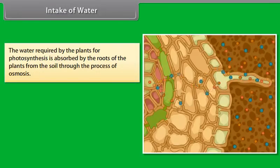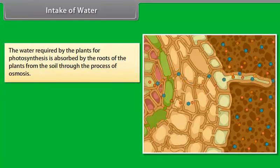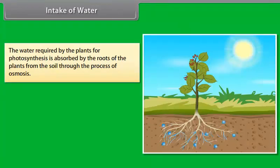Intake of water. The water required by the plants for photosynthesis is absorbed by the roots of the plants from the soil through the process of osmosis.